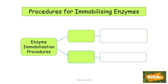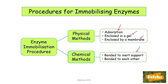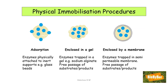There are two main procedures for immobilizing enzymes. There are physical methods, which do not involve chemical bonds, and there are chemical methods, which involve chemical bonds. The physical methods involve adsorption — attaching the enzymes to something else — or enclosing the enzymes in a gel, or putting the enzymes into a membrane. The chemical methods involve bonding the enzymes to an inert support, such as a glass bead, or bonding the enzymes to each other.